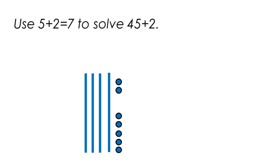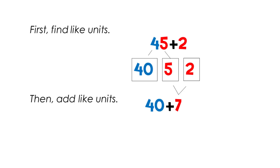Now use five plus two equals seven to solve forty-five plus two. First, find the like units, then add the like units. So in 45, there are four tens and five ones. And in the number two, there are only two ones. So we can add the like units, which are the ones units. Five plus two equals seven.